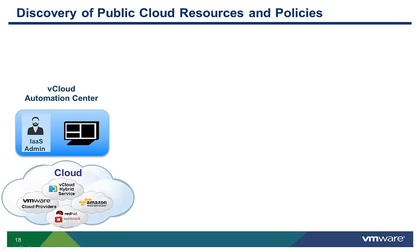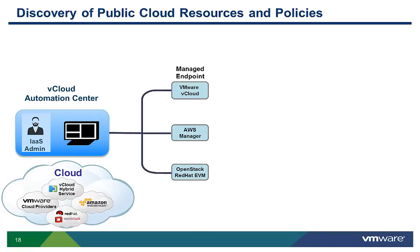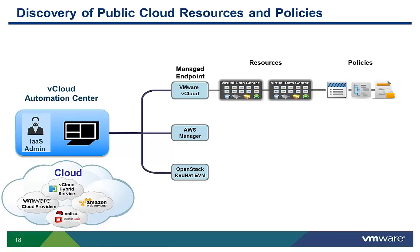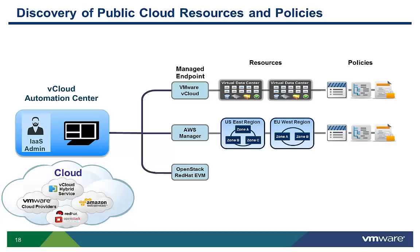Discovering public cloud resources is very similar to discovering virtual or physical compute resources. You define a management endpoint, which could be VMware vCloud, Amazon Web Services, or Red Hat OpenStack. vCloud Automation Center then discovers the compute resources and policies associated with those managed endpoints. In the case of VMware vCloud hybrid services or vCloud providers, those resources are virtual data centers and software-defined services associated with those virtual data centers. In the case of Amazon Web Services, those resources are geographic regions, availability zones, and their associated policies and services. In the case of OpenStack, there are no resources discovered, but VCAC discovers policies like OpenStack images, machine flavors, security pairs, and groups.